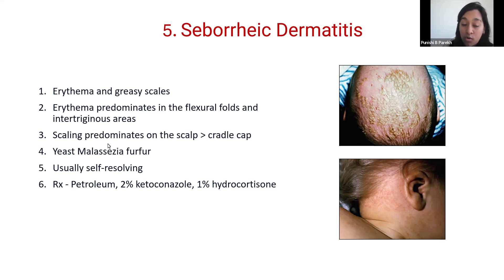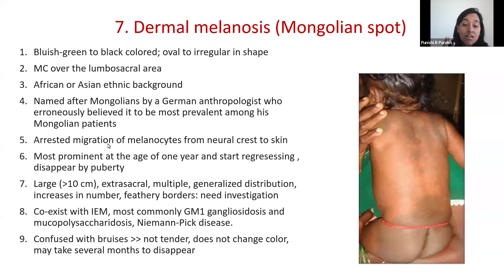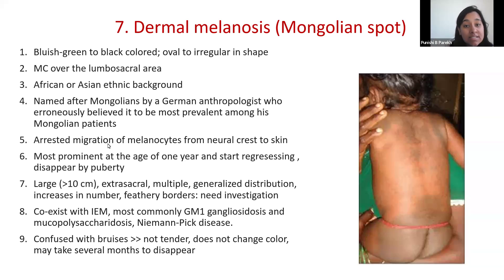The Mongolian spot, also called dermal melanosis, is a commonly seen and interesting skin lesion. These are bluish-green to black colored, oval or irregular-shaped skin lesions most commonly over the lumbosacral region. Asian and African ethnic backgrounds are more commonly associated. The term was coined by a German anthropologist who named it after the Mongolians, though it is not exclusive to that group. These are basically arrested migration of melanocytes from the neural crest to the skin. They are present at birth, most prominent around one year of age, then start regressing, and almost all disappear by puberty.